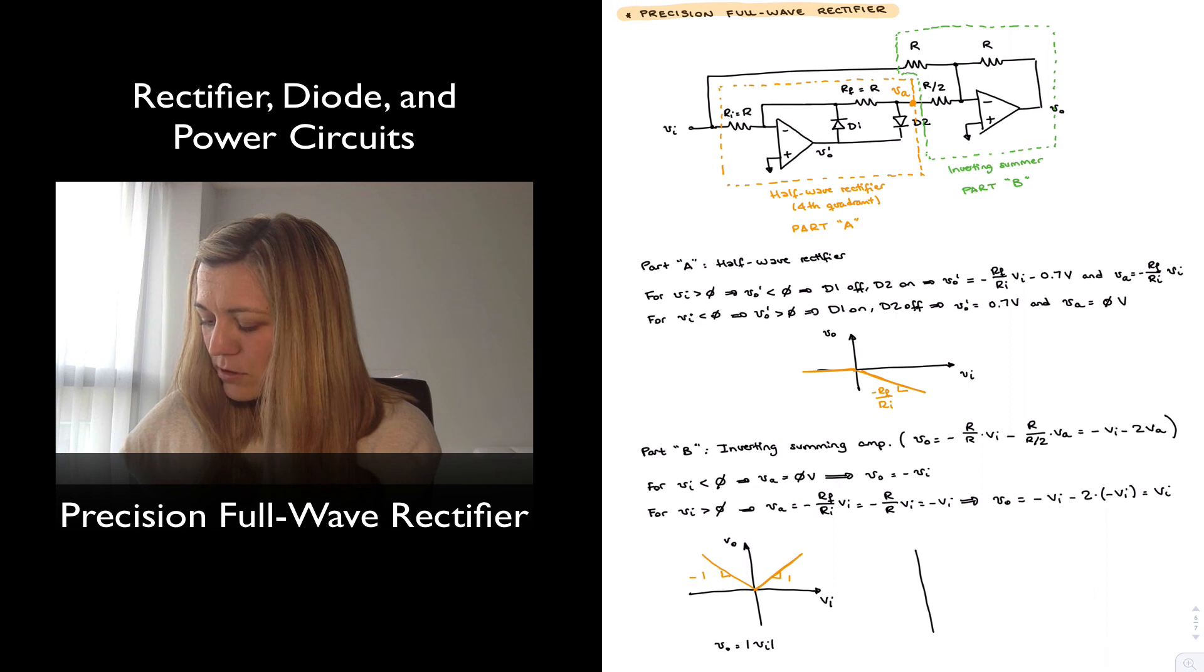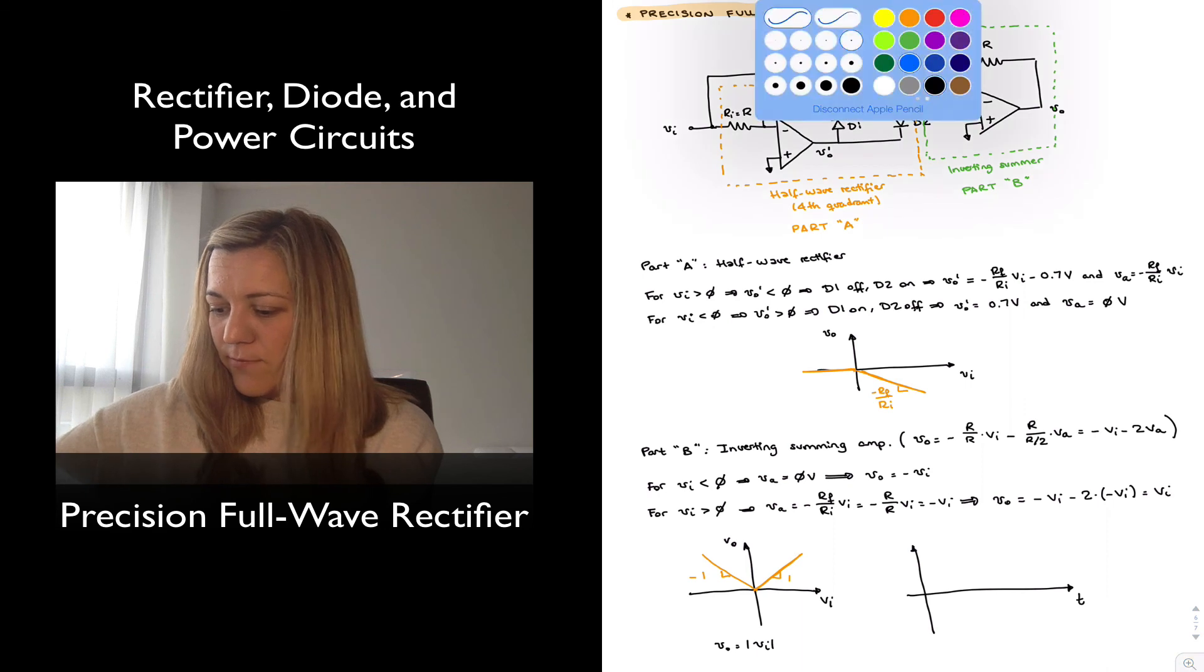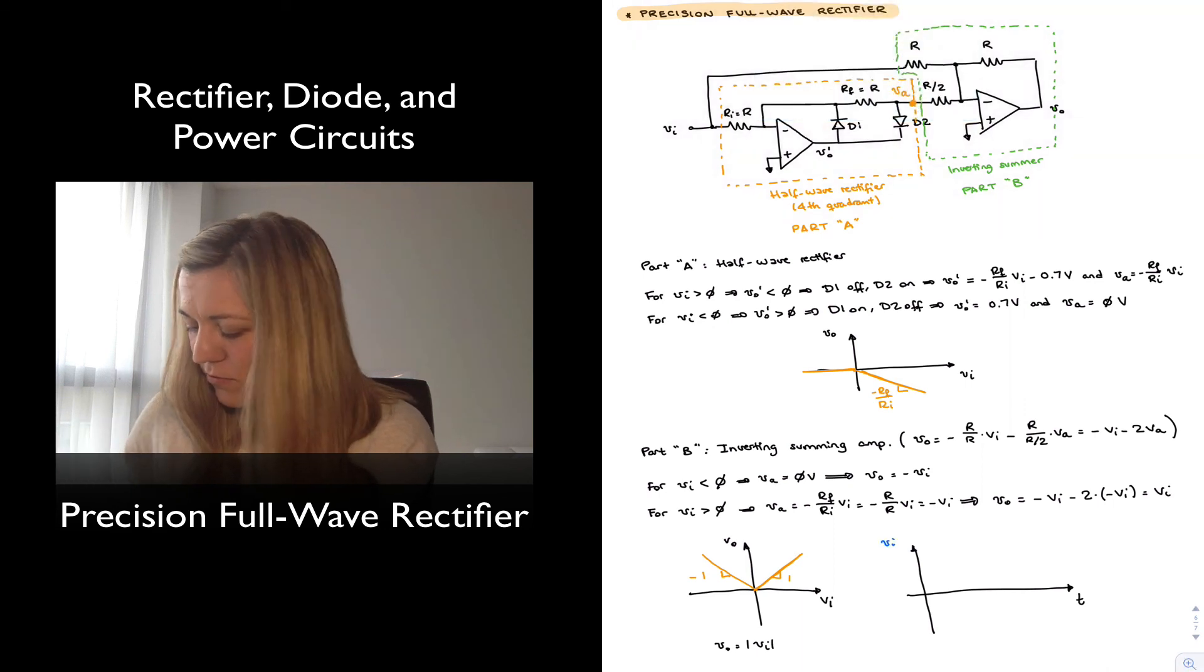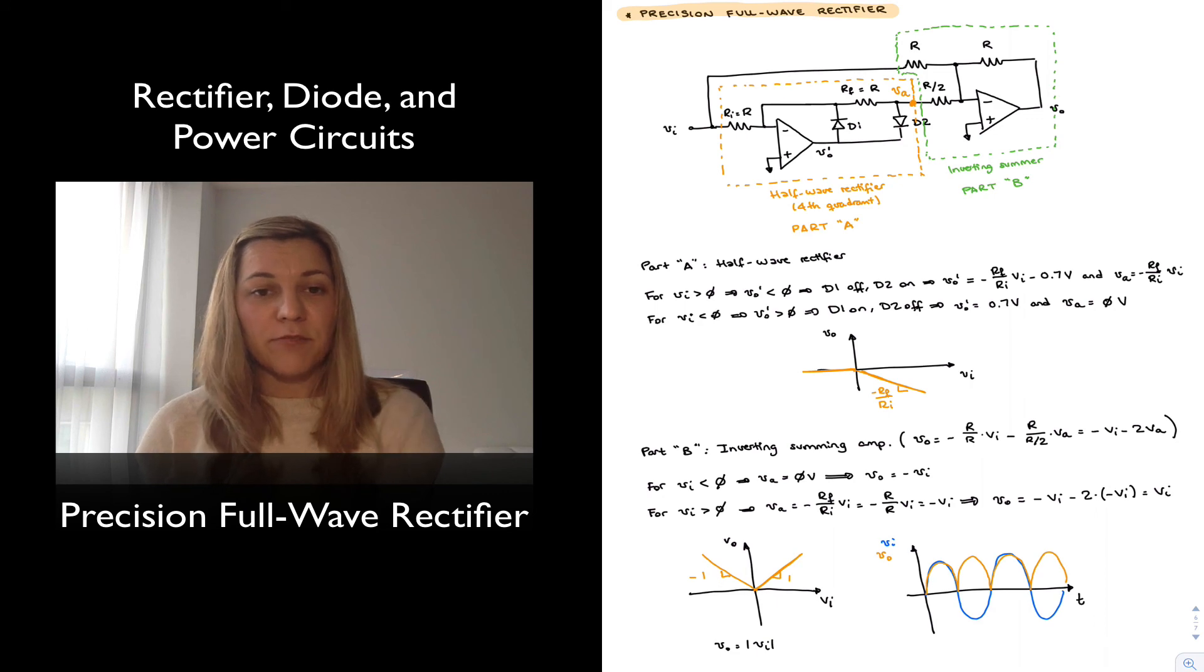And if we wanted to plot the time domain representation of Vin and Vout, we will have something like this. Vin will be a sinusoid and Vout will be equal to Vin during the positive half cycle, negative Vin within the negative half cycle. So perfect full wave rectification. Thank you.